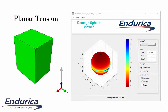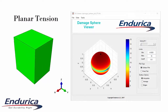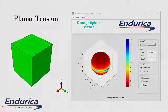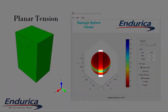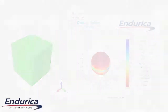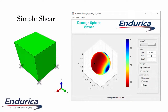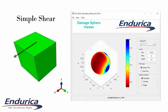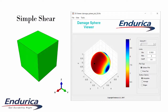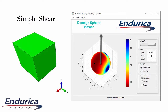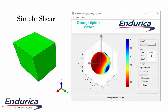In planar tension, the unit cube is stretched in the z direction while deformation in the y direction is prevented; the x direction is free. As with simple tension, the damage sphere shows that the critical plane has its normal in the z direction. In simple shear, the bottom face of the unit cube is fixed and the top face is displaced in the x direction but fixed in the y and z. The damage sphere here shows that the critical plane occurs with an angle of about 45 degrees from the y-z plane about the y axis.